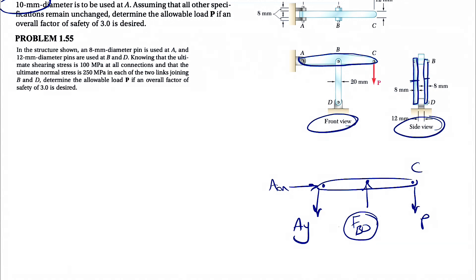We can find the area for one member and multiply by two, or consider two FBD forces so you only use the area of one member — it's up to you. I'll go with FBD as the resultant of the forces in both BD members — one in the front and one in the back if you look at the front view.